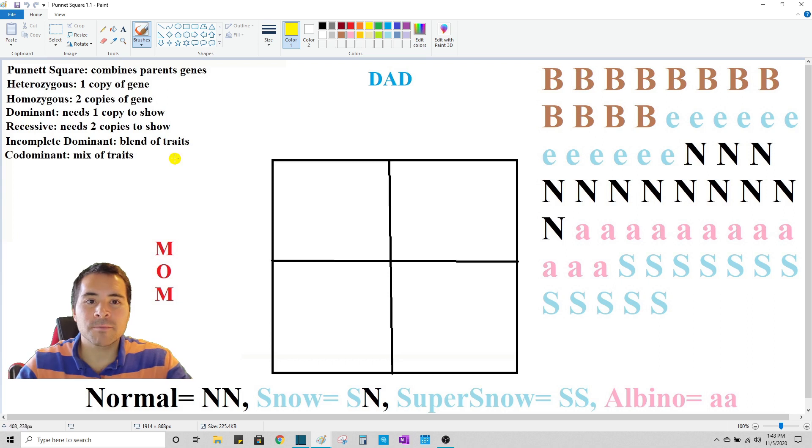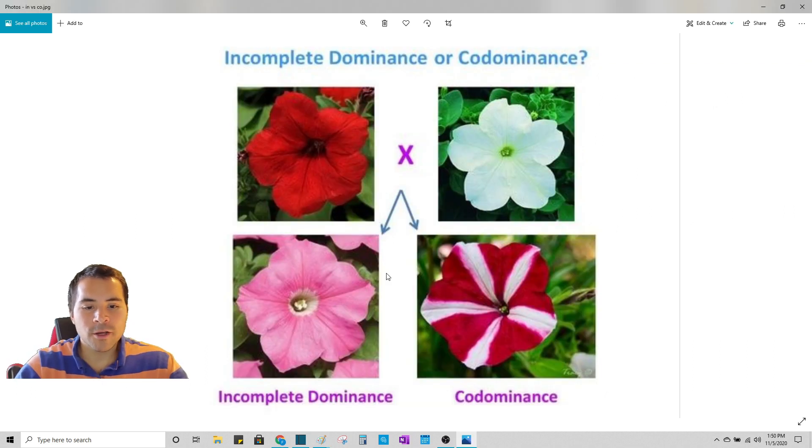So we've covered two types so far. Dominant only needs one copy of the gene to show its dominance and recessive winds up needing two copies of the gene to show its display or characteristic trait. We have two other expressions that genes can take on that will apply to leopard geckos as well. So here we have a really quick example of incomplete dominance versus co-dominance. So you have two flowers here. Each one of these flowers is going to pass on half of their genetic code to the little baby flowers that are sitting at the bottom here.